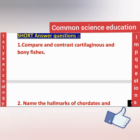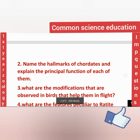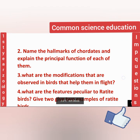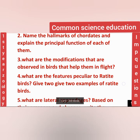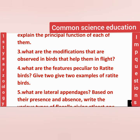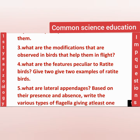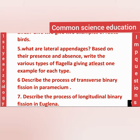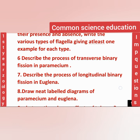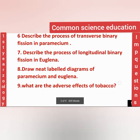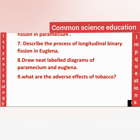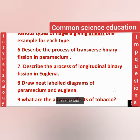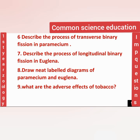The selected short answer questions given are: compare and contrast cartilaginous and bony fishes, name the hallmarks of chordates and explain the principal functions of each of them, what are the modifications observed in birds that help them in flight, and what are the features of birds? From Locomotion: lateral appendages, transverse binary fission in Paramecium, longitudinal binary fission in Euglena, Euglena diagram, Paramecium diagram. One of Euglena or Paramecium will confirm. Also, the pseudopodia question is very important from Locomotion.